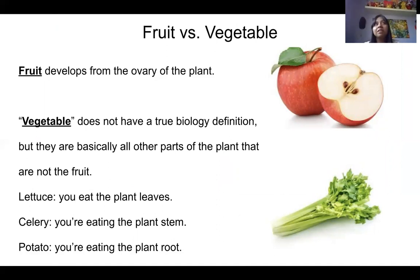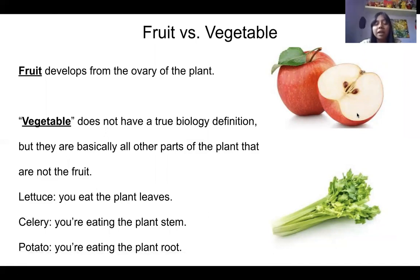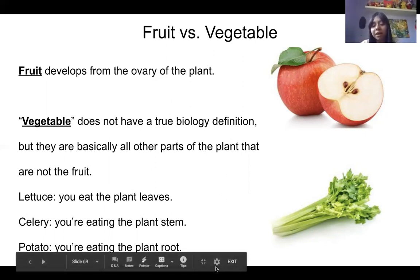Finally, fruit versus vegetable. Every fruit we eat has been developed from an ovary — the seeds are inside and the flesh around them is the ovary. In biology, the term 'vegetable' doesn't have a true biological definition — it refers to everything else we eat that is not an ovary. When we eat lettuce, we're eating the plant leaves; celery is the plant stem; and a potato is the plant root. Anything that is not the ovary is labeled a vegetable.